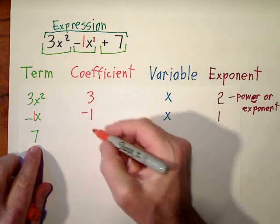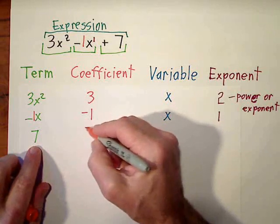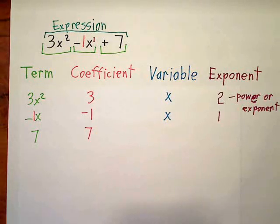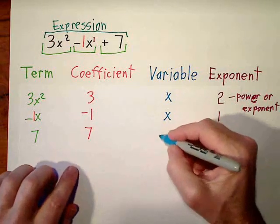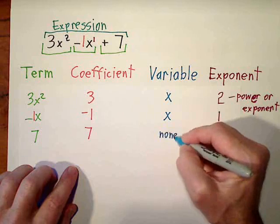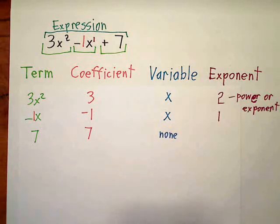So on this, they're kind of making us call this a coefficient. Again, I would rather just call it a constant. And they're saying the variable is none. The exponent is none as well.